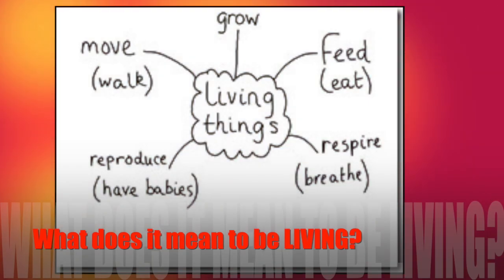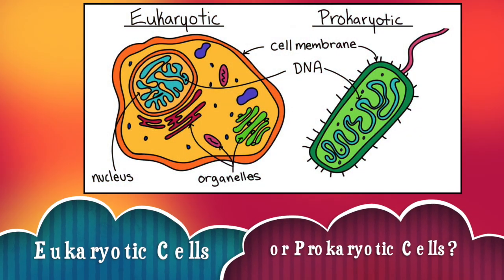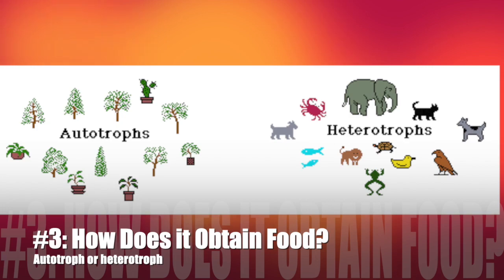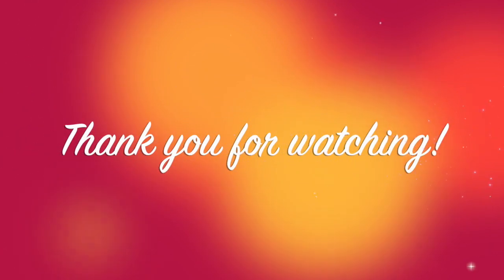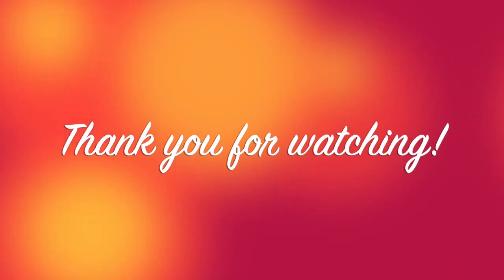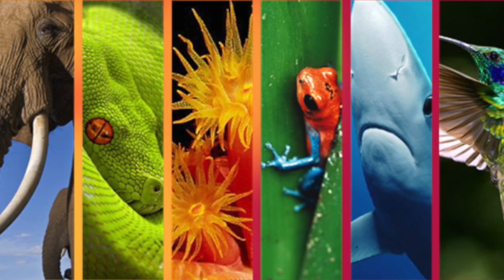The last thing we're going to discuss in this video is what does it mean to be a living thing? Biologists typically ask four questions: number one, does it have a nucleus in its cells? Number two, is it unicellular or multicellular? Number three, how does it get food? And number four, how does it reproduce? Over the next few videos, we are going to be discussing these topics and how they relate to the classification of life. I hope this review video helps and you stay tuned for the next videos.